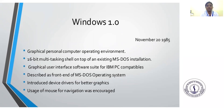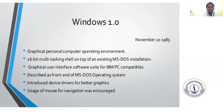Windows 1.0 was available on November 20, 1985. Its features include: a graphical personal computer operating environment; 16-bit multitasking shell on top of an existing MS-DOS installation; graphical user interface software suite for IBM PC compatibles; described as a front end of the MS-DOS operating system; introduced device drivers for better graphics; and increased use of the mouse for navigation.